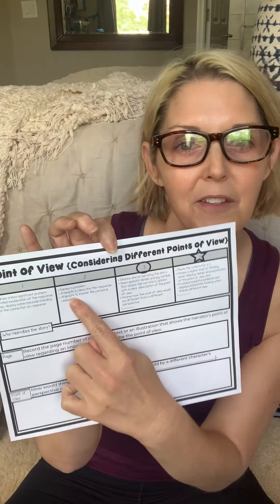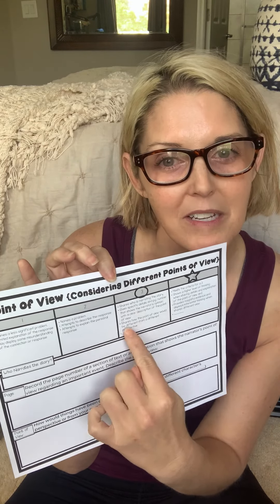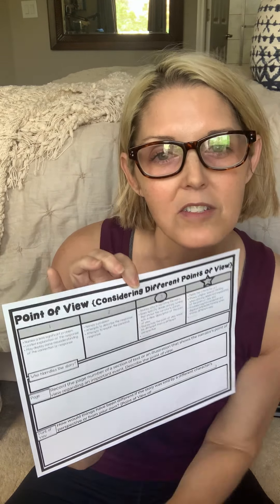A four is above and beyond. A two is they're getting there, they've got some of it, but they still have a little ways to go. And then a one is they're just starting to understand, and we have some more work to do in the standard.